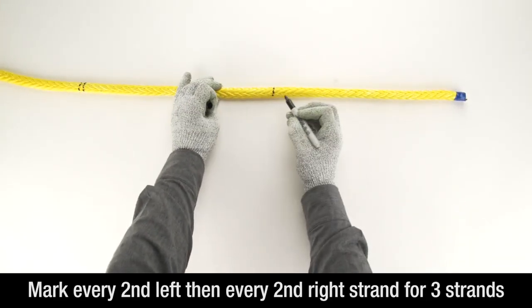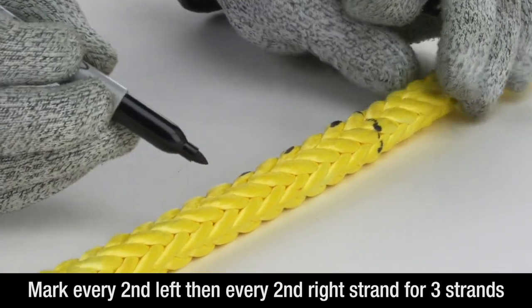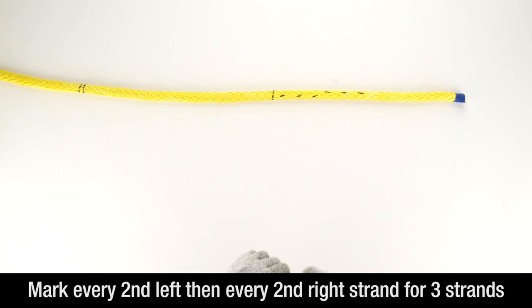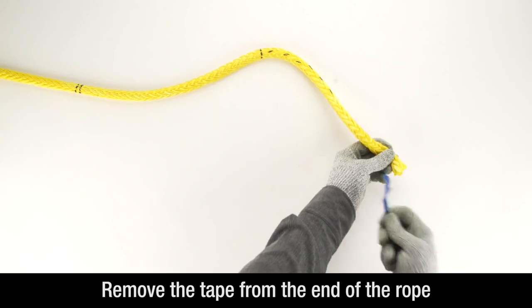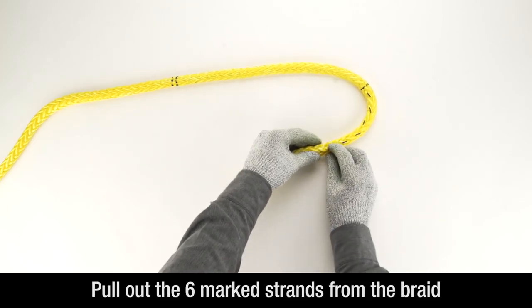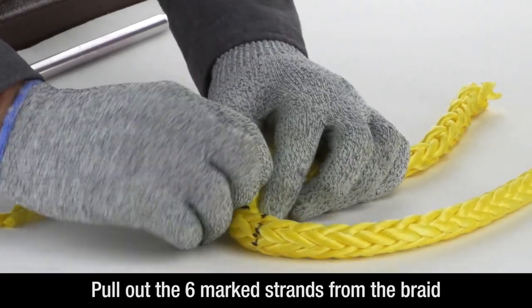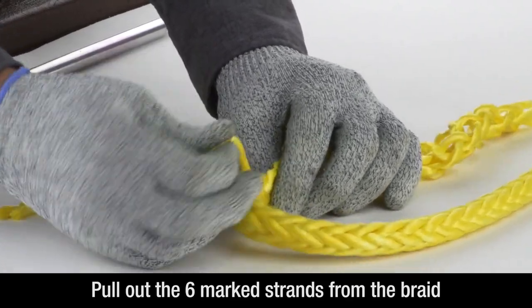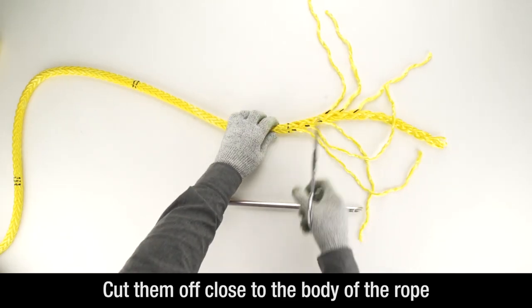Now, from mark 1, mark every second left and every second right strand for 3 strands. Remove the tape at the end of the rope and pull out the 6 marked strands from the rope's braid. Cut them off close to the body of the rope, at your marks.